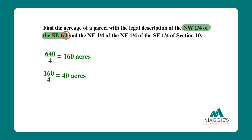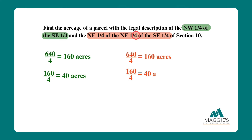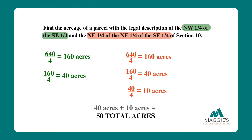For the second parcel (highlighted in orange), we repeat the process: 640 ÷ 4 = 160, then 160 ÷ 4 = 40, then 40 ÷ 4 = 10 acres. Now we add the first parcel of 40 acres and the second parcel of 10 acres for a total of 50 acres. The government survey method is like a giant checkerboard where each piece of land is defined by its position within the grid.